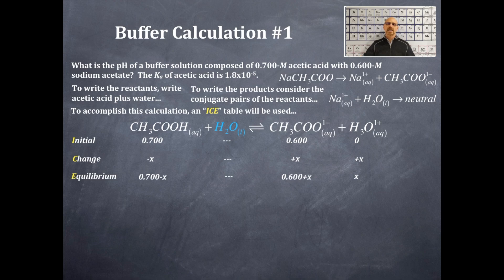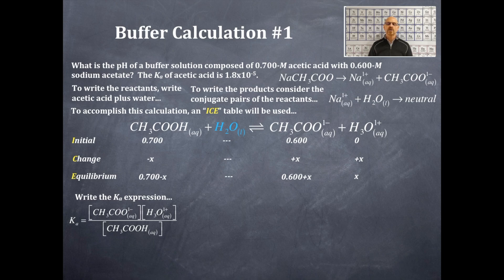So now what I need to do is I need to write the Ka expression. The Ka expression, just like all K expressions, is the products over the reactants with the stoichiometric coefficients as exponents, excluding solids and liquids because they do not affect the Ka value. So therefore the water is not included. So my Ka expression is right here: Ka is equal to acetate ion times hydronium ion, those are both in the numerator with exponents of ones, and the acetic acid concentration in the denominator with an exponent of one.